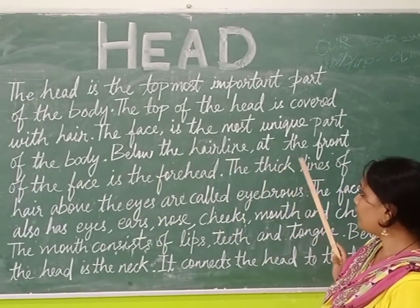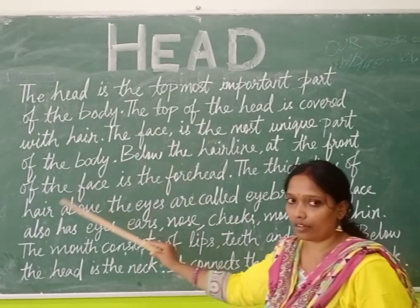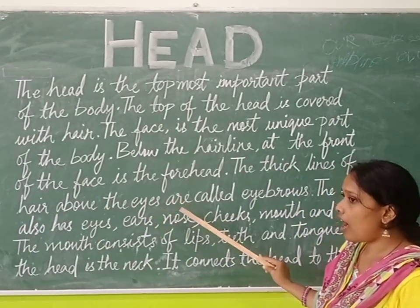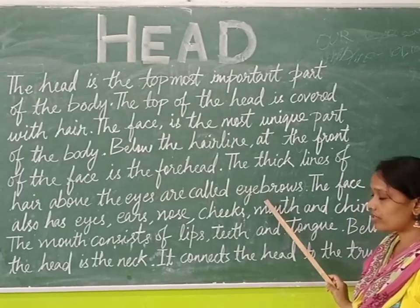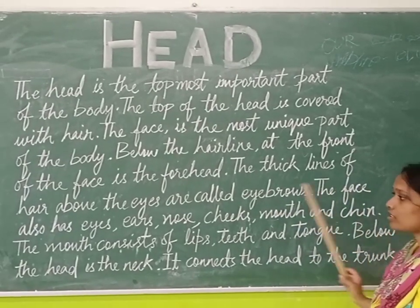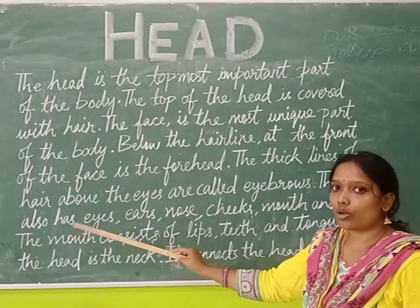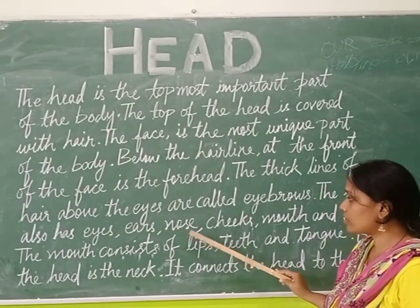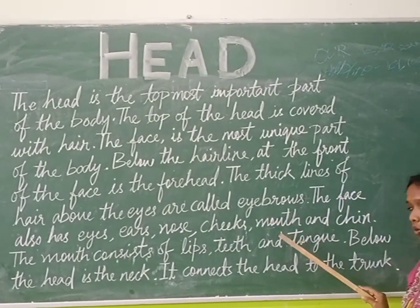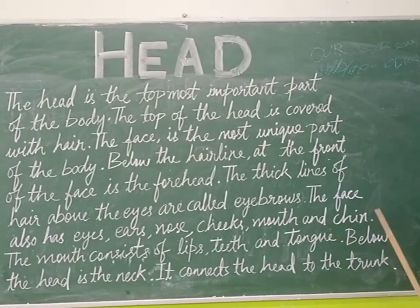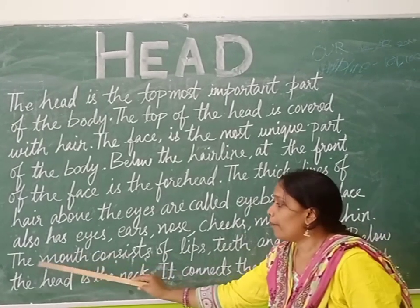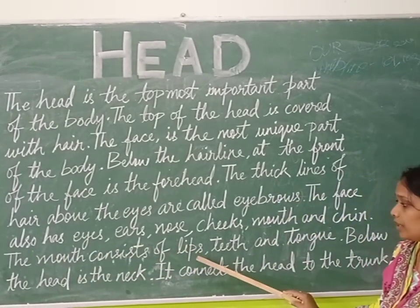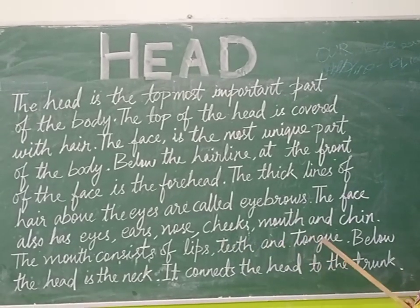The thick lines of hair above the eyes are called eyebrows. The face also has eyes, ears, nose, cheeks, mouth and chin. The mouth consists of lips, teeth and tongue.